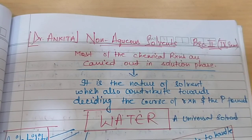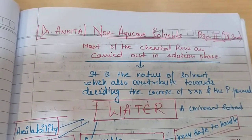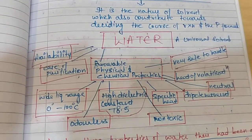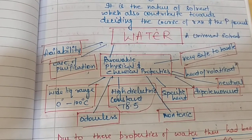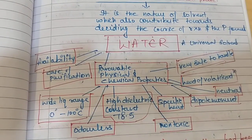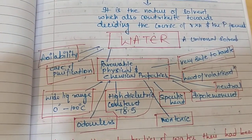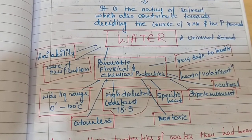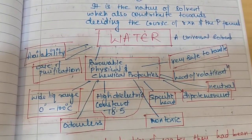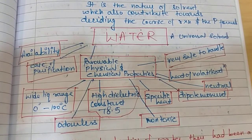Before dealing with non-aqueous solvents, I would like to give you a brief idea about water, which is a universal solvent. Water is called a universal solvent because of its magnificent properties: it is easily available, its ease of purification is high, and it has a wide range of favorable physical and chemical properties. These include a wide liquid range from 0 to 200 degrees Celsius, it is odorless, has high dielectric constant, high specific heat capacity, is non-toxic, and has a high dipole moment.